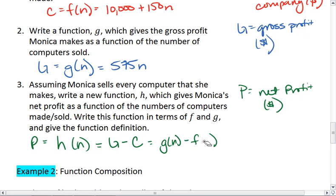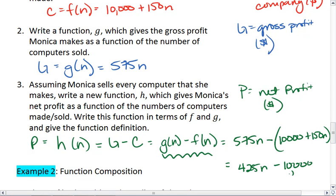So there's h in terms of f and g. That's your first part of your answer. And this means that we are taking 575n minus 10,000 plus 150n. So that equals 425n minus 10,000. And that is the second answer I would be looking for.